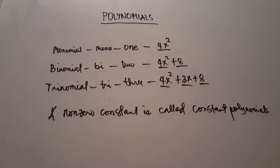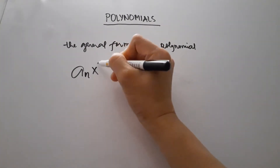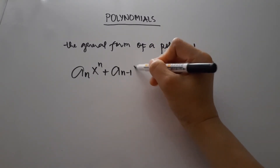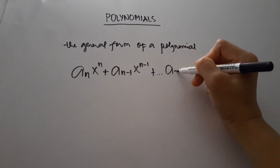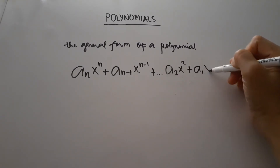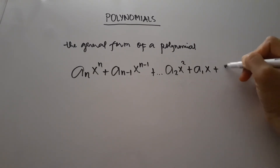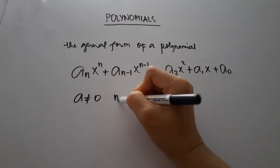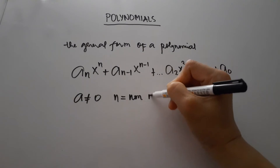The general form of a polynomial of degree n in the variable x is: a sub n times x to the nth power, plus a sub n minus 1 times x to the n minus 1st power, and so on, plus a sub 1 times x, plus a sub 0, where a sub n is not equal to 0 and n is a non-negative integer.